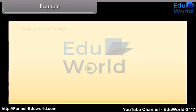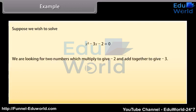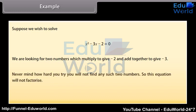Example: suppose we wish to solve x squared minus 3x minus 2 equals zero. We are looking for two numbers which multiply to give minus 2 and add together to give minus 3. No matter how hard you try, you will not find any such two numbers, so this equation will not factorize. For this we need another approach — we will learn that in the next screen.